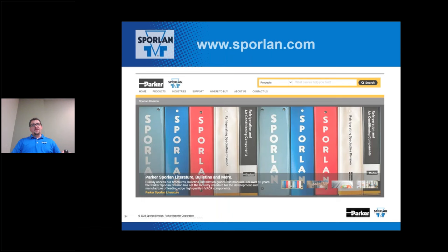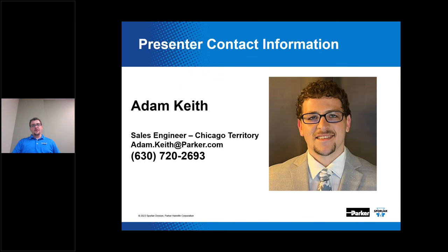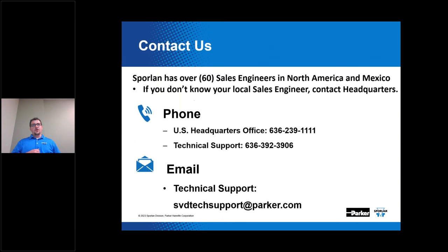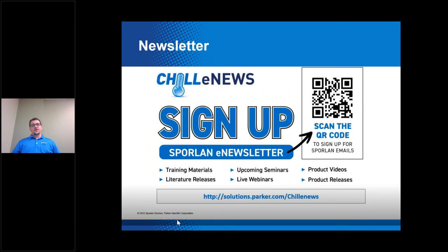That covers the main content. Our website is sporlan.com. My contact info is listed — I'm in the Chicago territory covering most of Illinois and Indiana. We have over 60 sales engineers in North America and Mexico. If you're not aware of who your local sales engineer is, contact headquarters where tech support can direct you. There's also a QR code to sign up for Chilly News, our quarterly newsletter to keep you up to date on updates and new products.